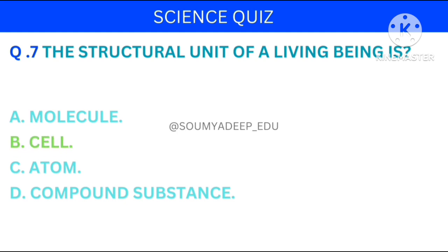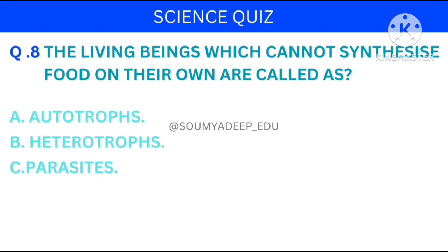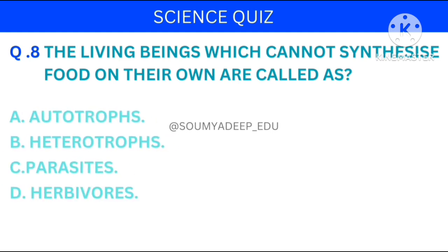The answer is cell. The living beings which cannot synthesize food on their own are called as? The options are: autotrophs, heterotrophs, parasites, herbivores. Your time starts now.